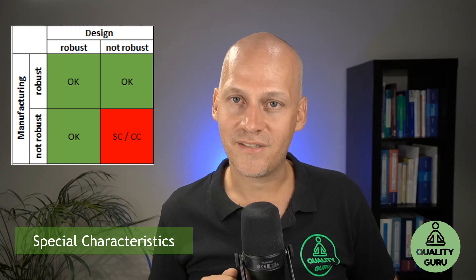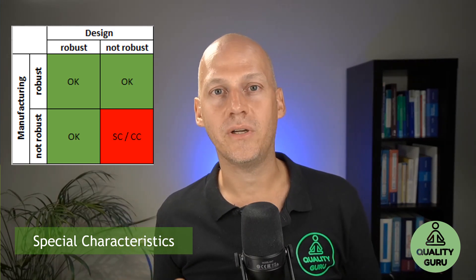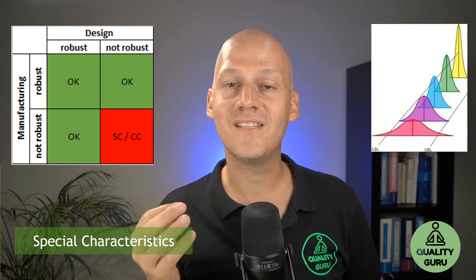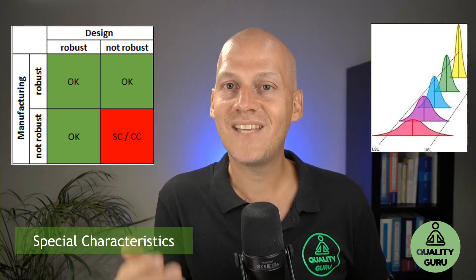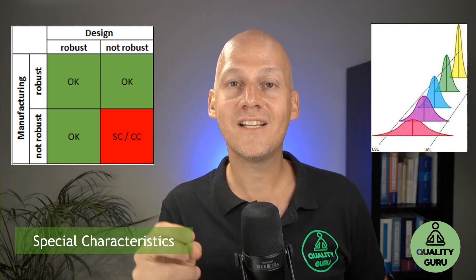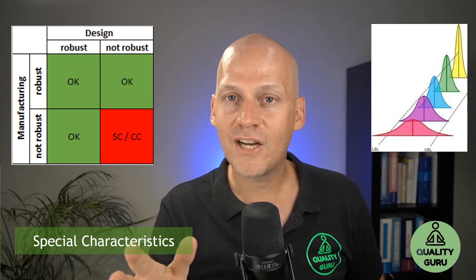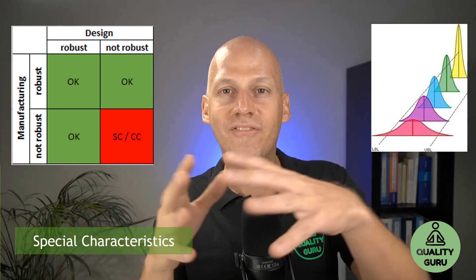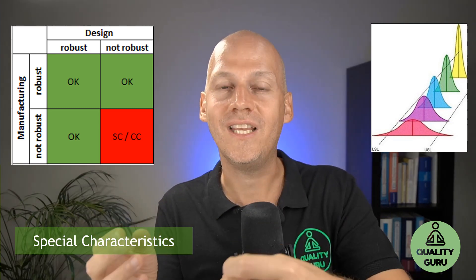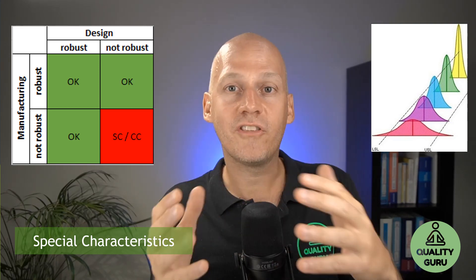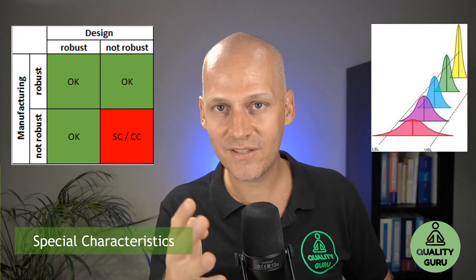The four-quadrant model gives guidance on how to decide whether to assign an SC. It uses the concept of robustness — you have robustness of design and robustness of manufacturing. Robustness means sensitivity to variation. If a design is very robust, it's insensitive to variation. If a design is not robust, it's very sensitive to variation — meaning the function of the product can only be ensured if everything stays a certain way. If material, dimensions, or temperature change even a little, it could already lead to failure.